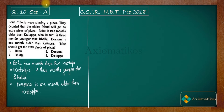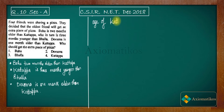The three important points are: Bahu is two months older than Katappa; Katappa is three months younger than Bhalla; and Devsena is one month older than Katappa. Notice that everything is related to Katappa, so let us consider the age of Katappa to be X.